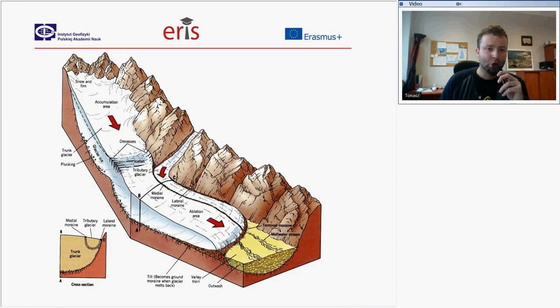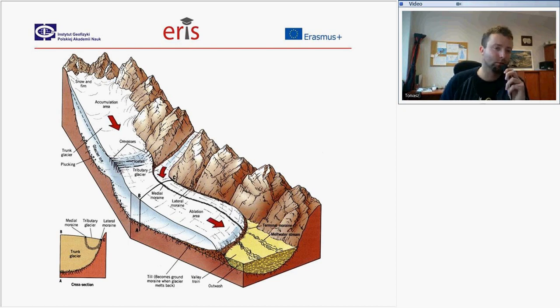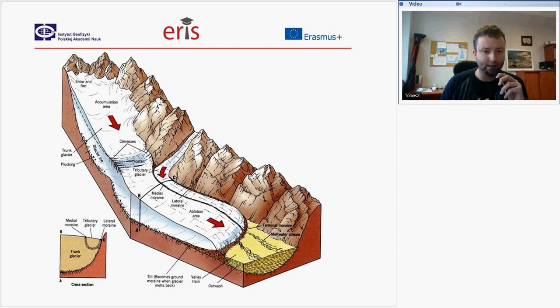This shows the glacier — the accumulation area in the upper parts, the ablation area in the lower parts, and between them there is the equilibrium line altitude.